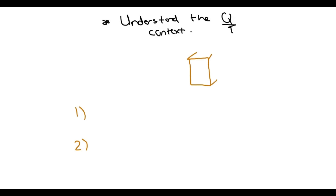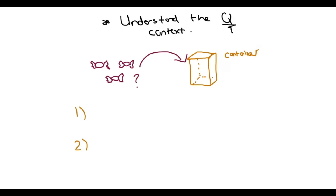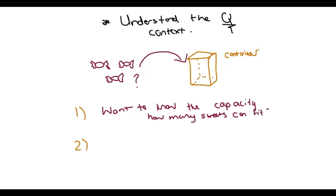Normally you would have a container — it could be a box or a plastic container. On the other side you have little sweets or toffees, and you want to know how many sweets can fit into the container. That is the first instance: I want to know the capacity of the container — not volume, but how many sweets will fit.